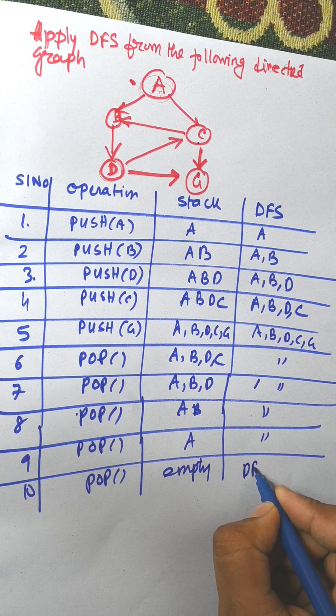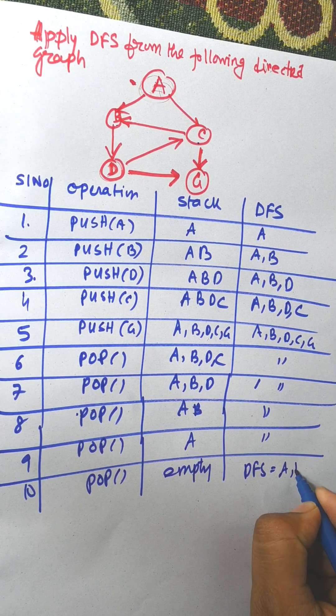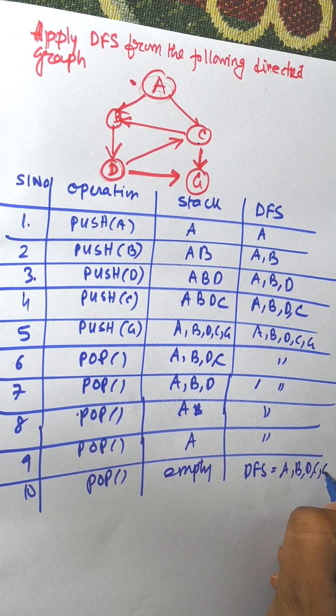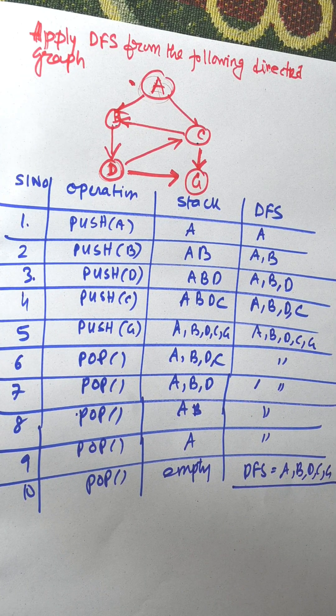Our answer is DFS equals A B D C and G. So this is the DFS of the directed graph.